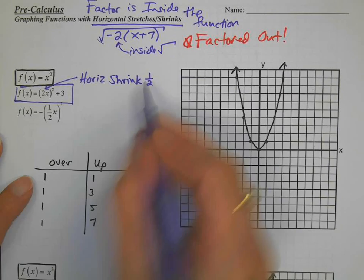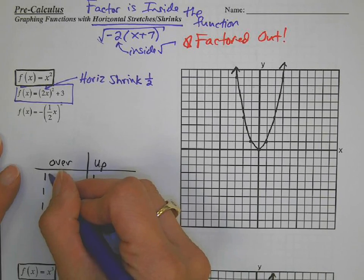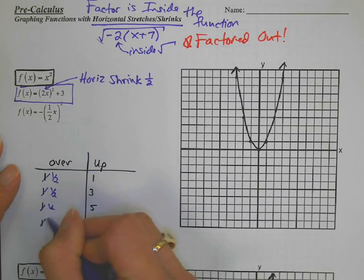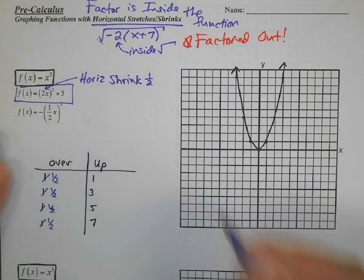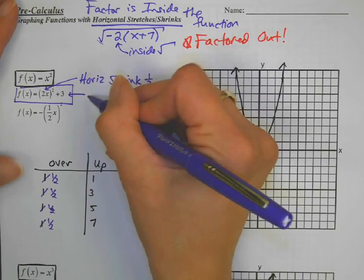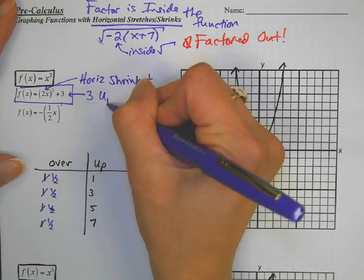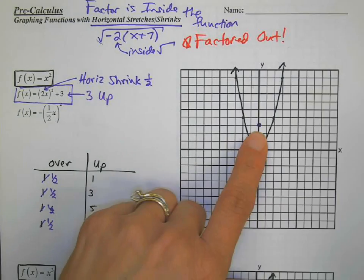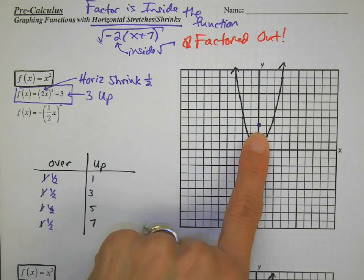So we need to multiply them all by a half. So we have a half, a half, one half, and one half. And we also have to translate this one three units up. So we'll take our basic parabola and go one, two, three units up. That's where we're going to start.